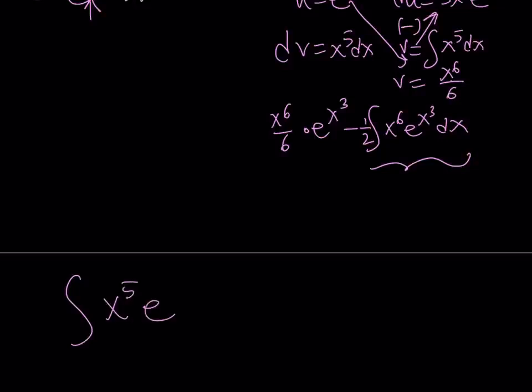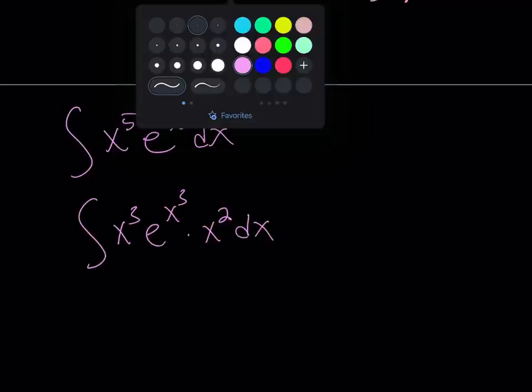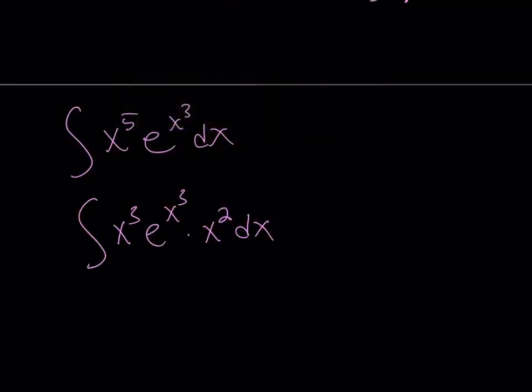Let's take a look at this. We have x to the fifth, e to the power x cubed dx. I'm going to separate the x to the fifth into two pieces. One of them is going to be x cubed. That's going to go with e to the x cubed. And the rest is going to be x squared dx. Awesome. Now, this is really awesome because I can use substitution.